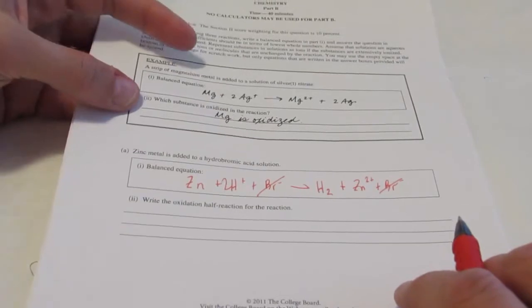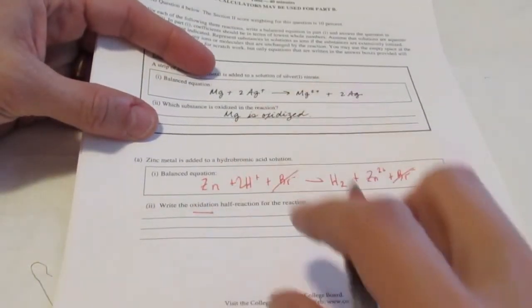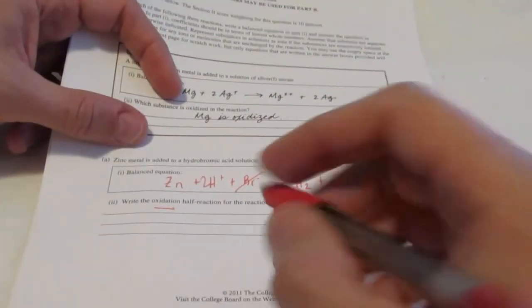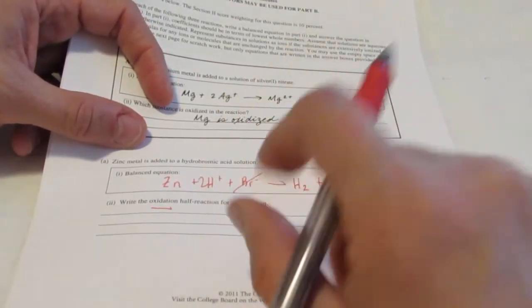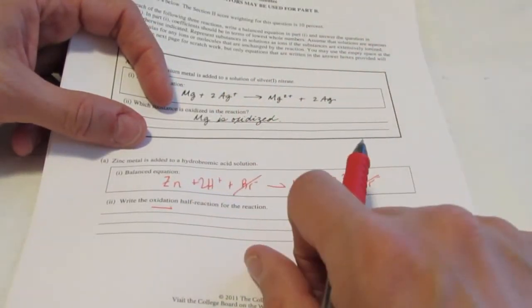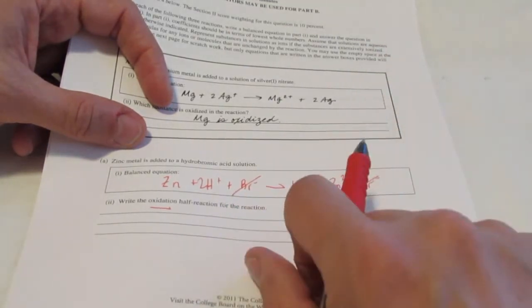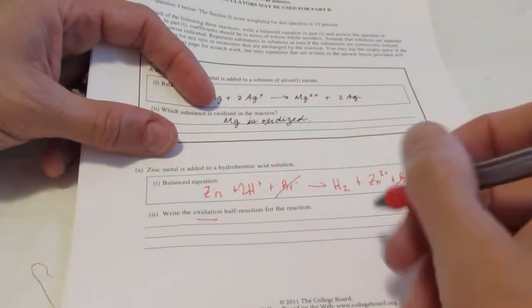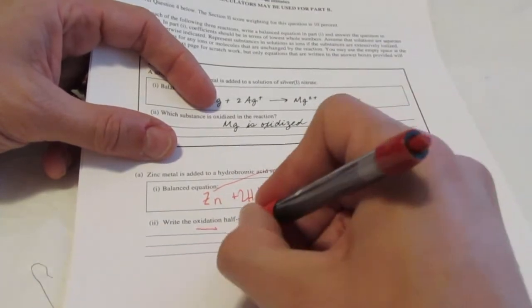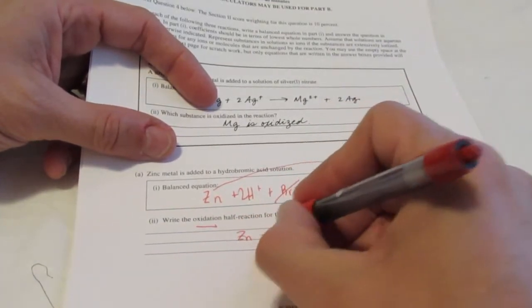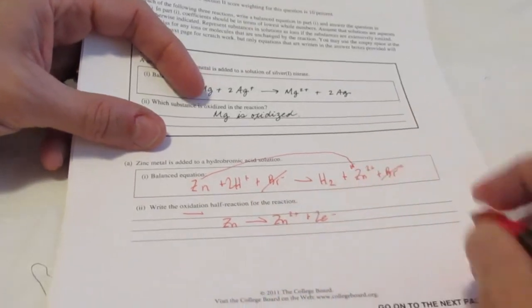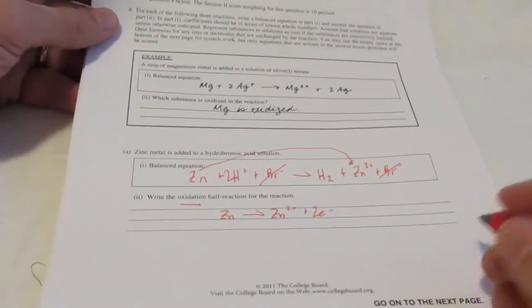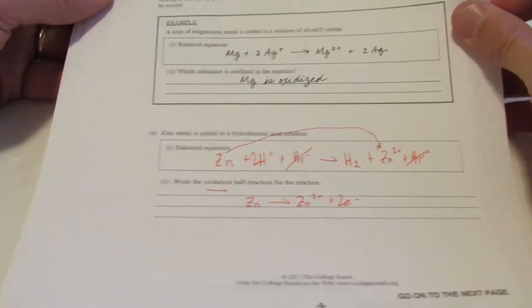That's the half reaction for the oxidation part. Remember, oxidation is losing electrons. I tell my kids, Leo goes grr. Lose electrons oxidation, Leo. And gain electrons reduction, grr. So I want the one that loses electrons. It looks like zinc goes from zinc with a zero charge to zinc two plus. We're going to balance that with two electrons on that side. Not too bad. Hey, I got five points on that one.